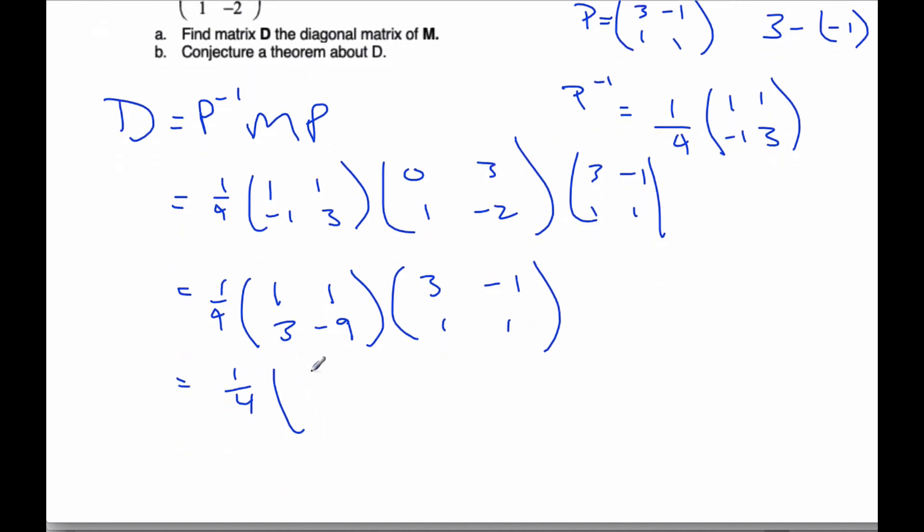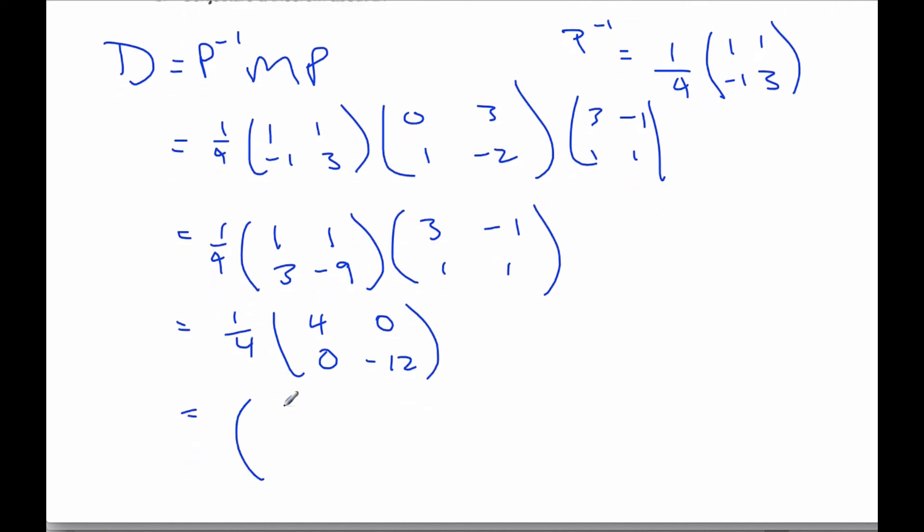And so I get 3 plus that is 4. I get negative 1, plus 1 is 0. I get 9 minus 9 is 0. And I get negative 3 minus 9 more is negative 12. And so now I'm going to multiply the 1 quarter in. And so when I do that, I get 1, 0, 0, negative 3. And so here is my diagonal matrix D.